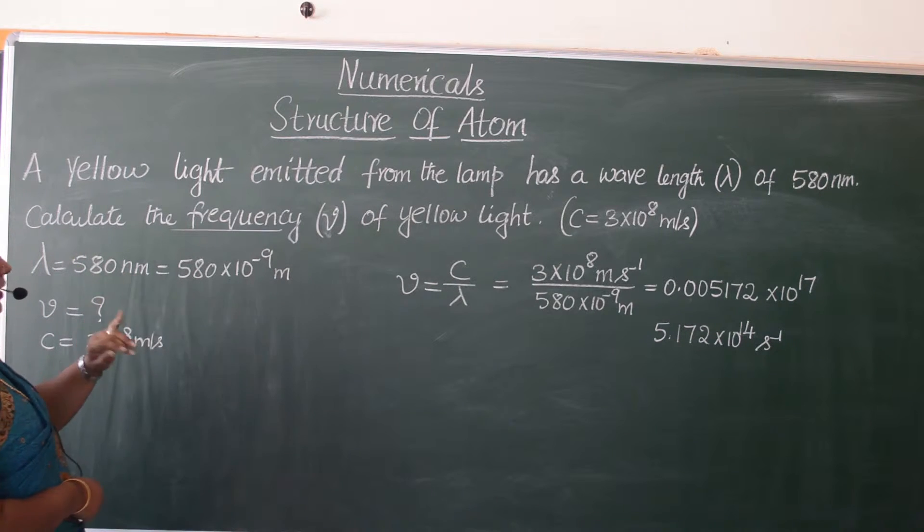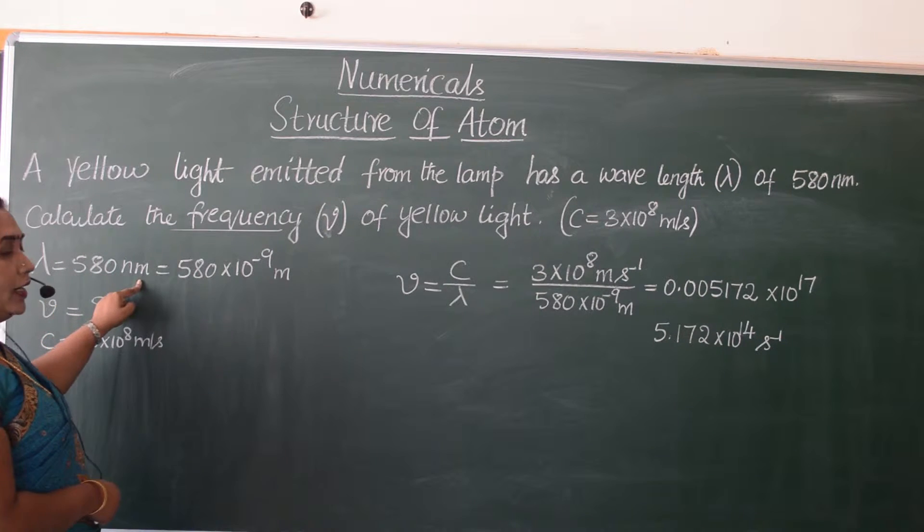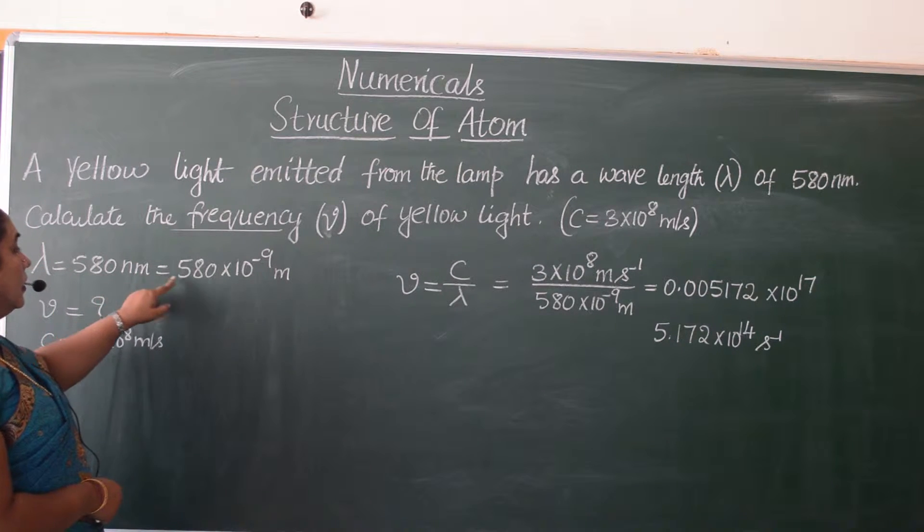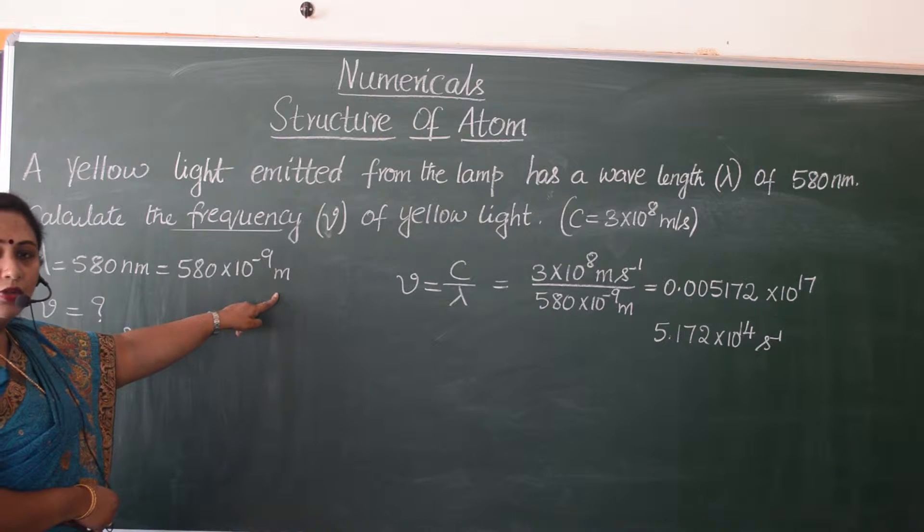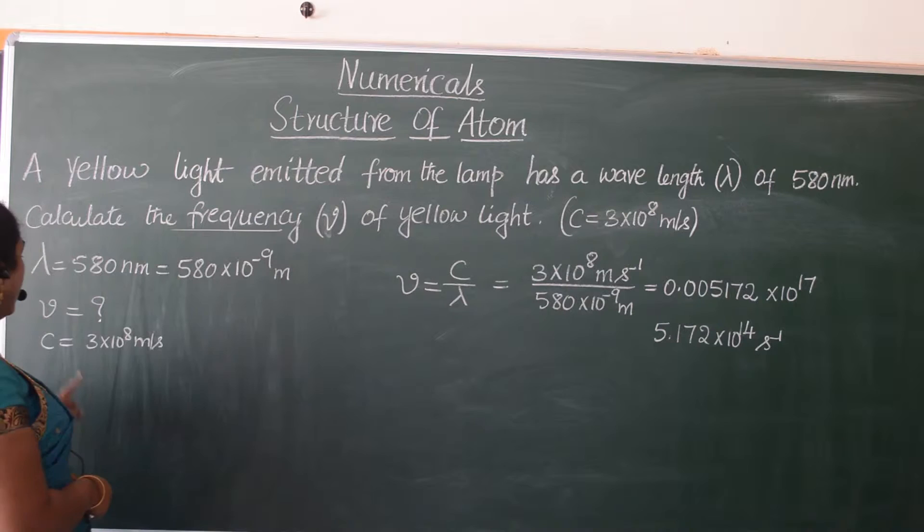The data that is given to us: lambda, the wavelength, is 580 nanometers. We are converting it into meters, so therefore it becomes 580 × 10^-9 meters.